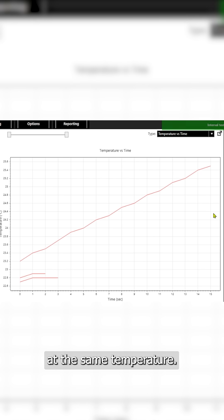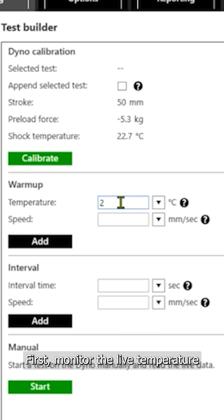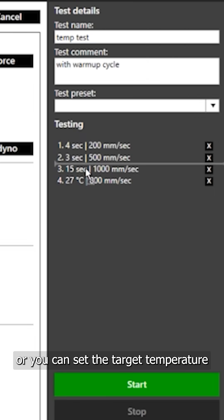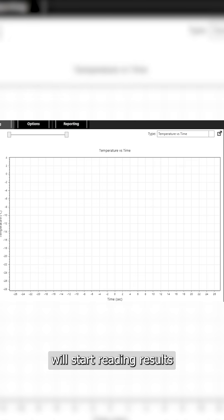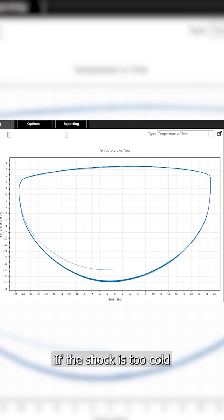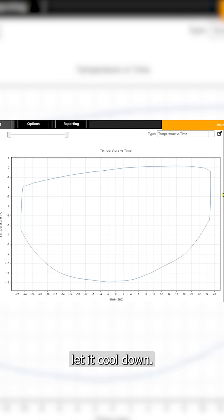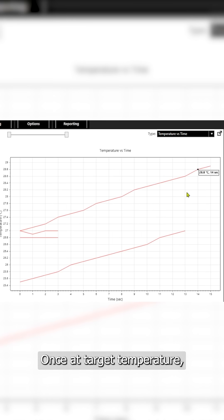And finally, always test at the same temperature. You can do it in two ways. First, monitor the live temperature in the software. Or you can set the target temperature and the shock dyno will start reading results only when the specific temperature is reached. If the shock is too cold, warm it up. If it's too hot, let it cool down. Once at target temperature, you're set to test.